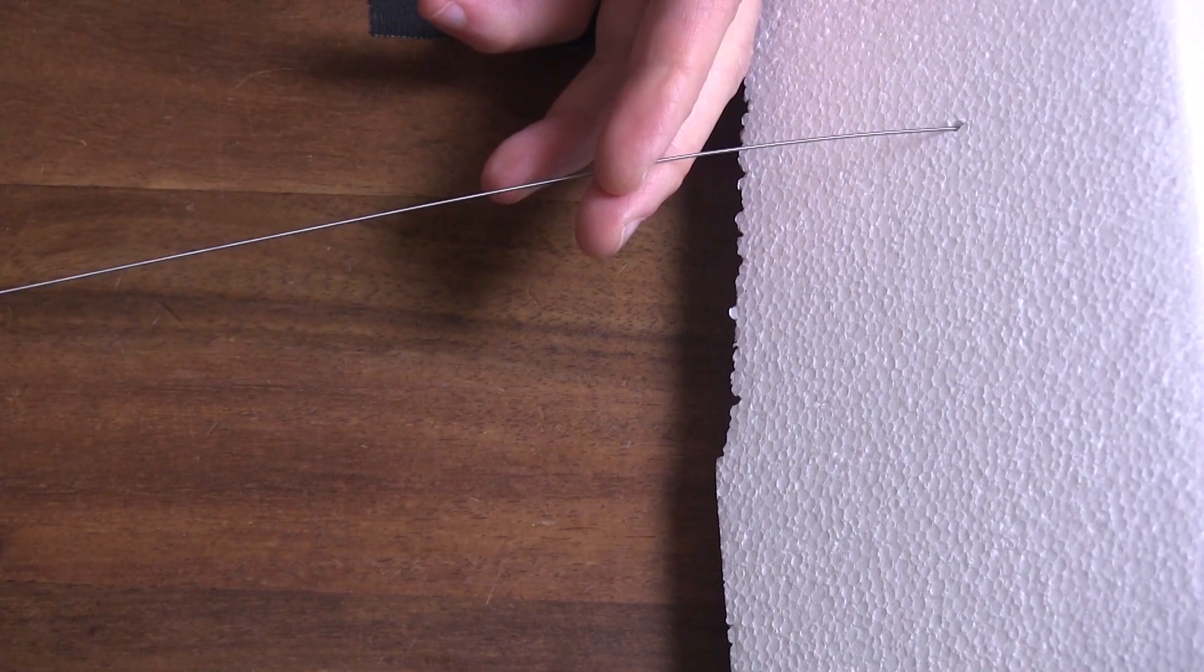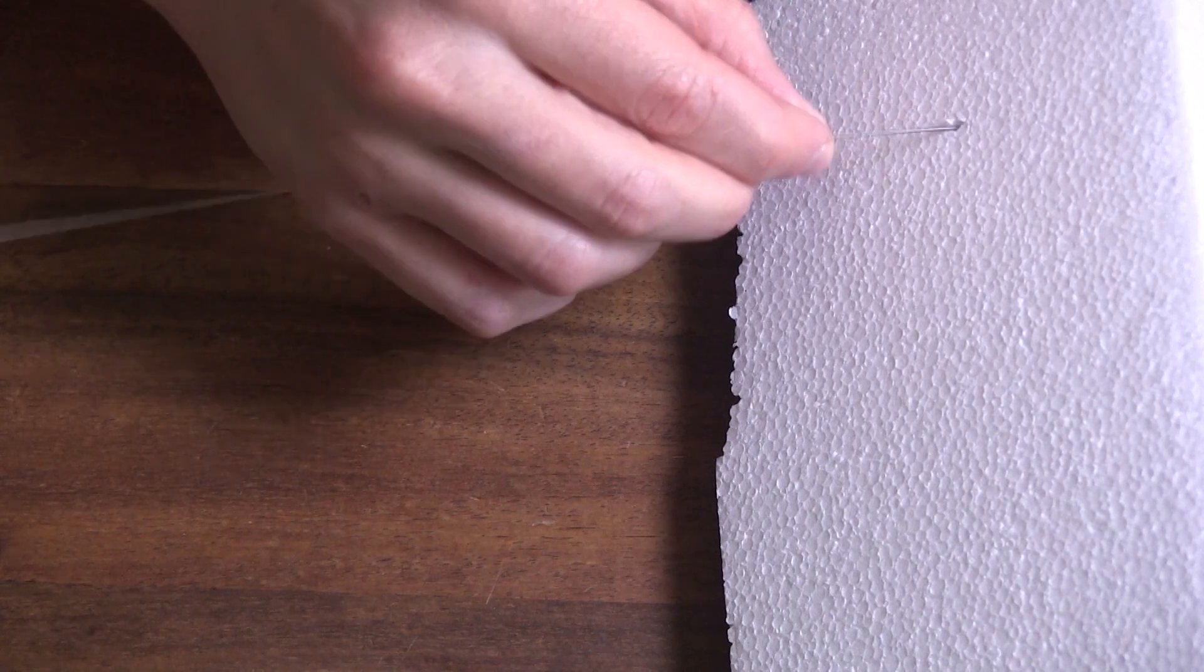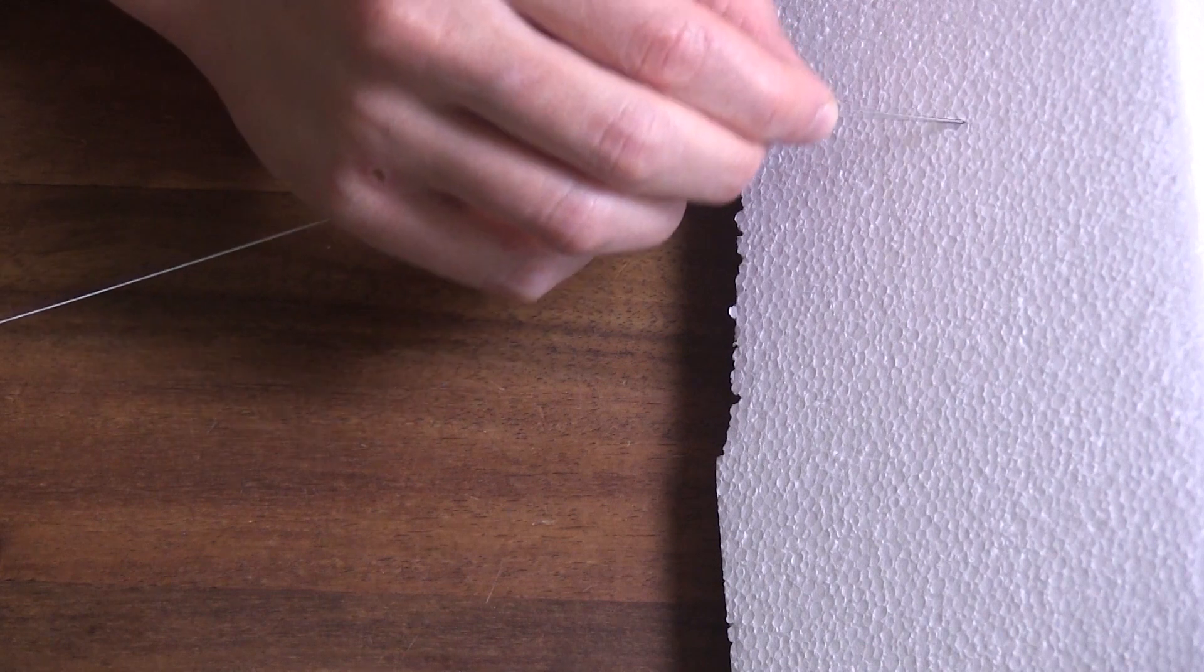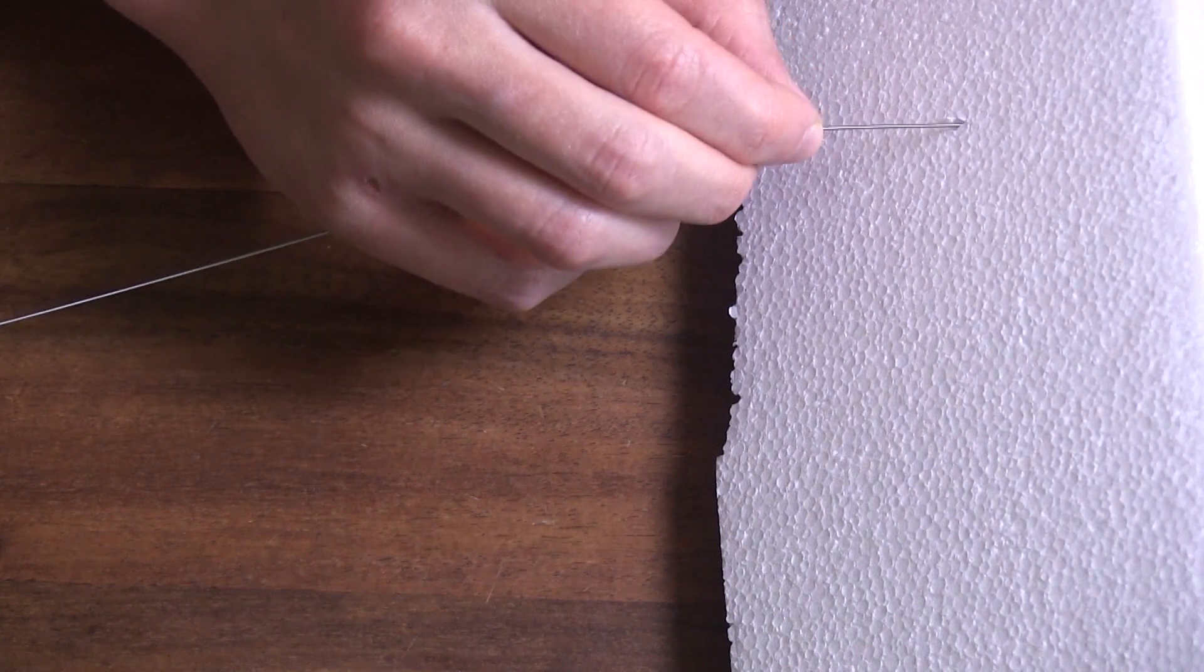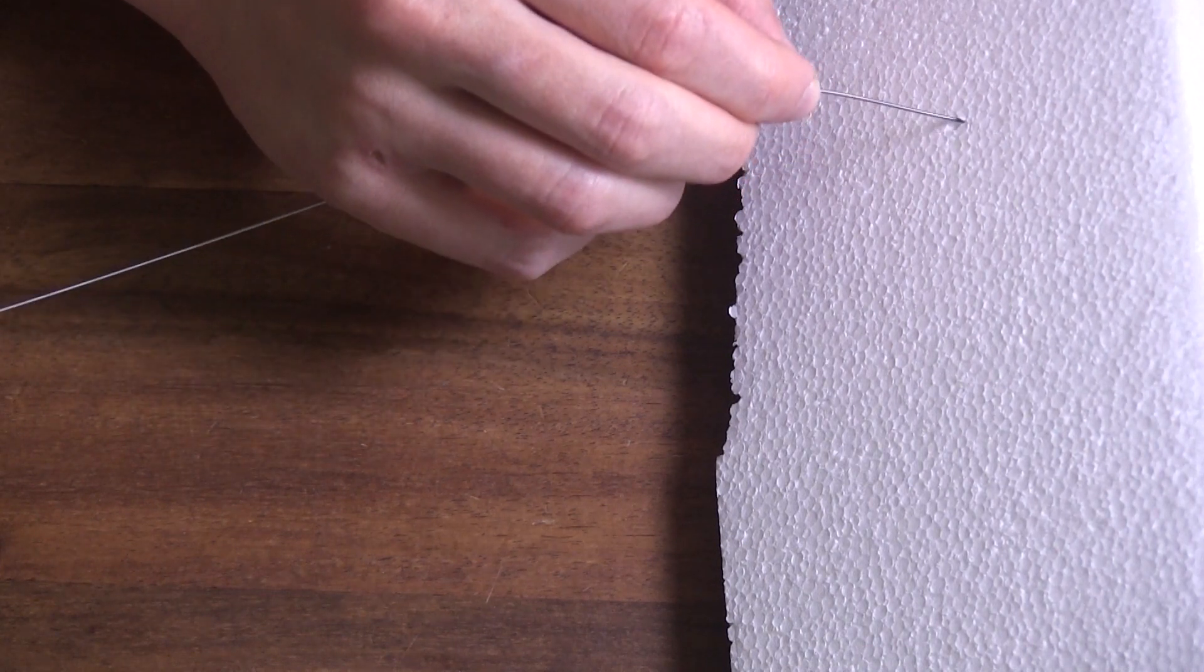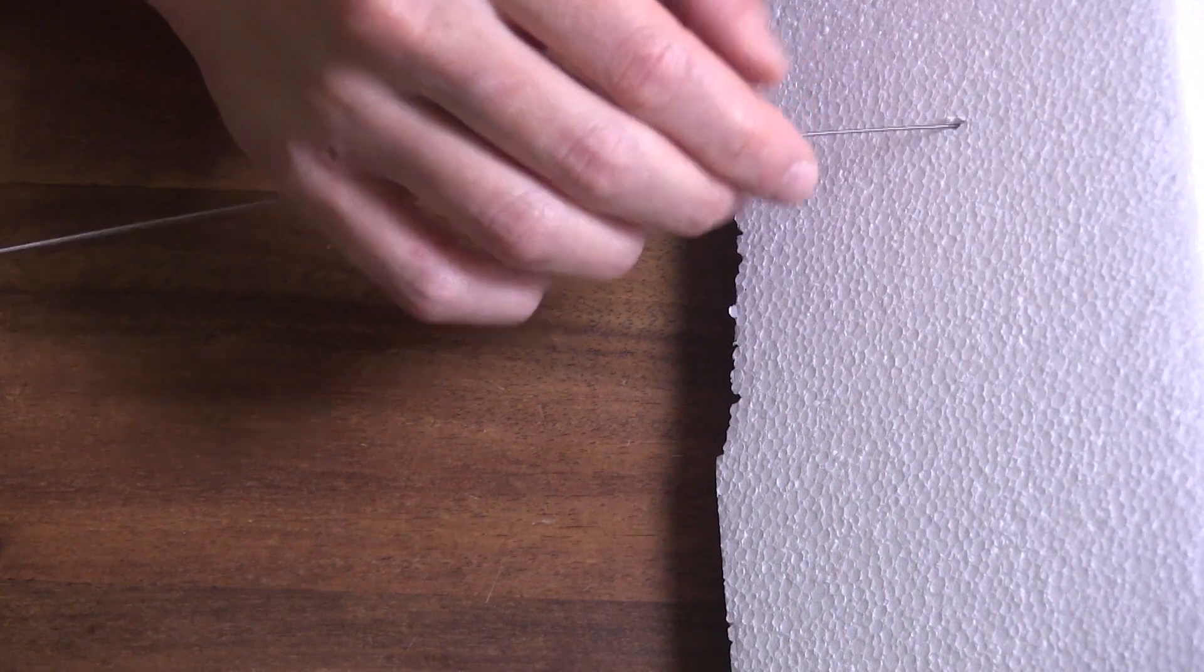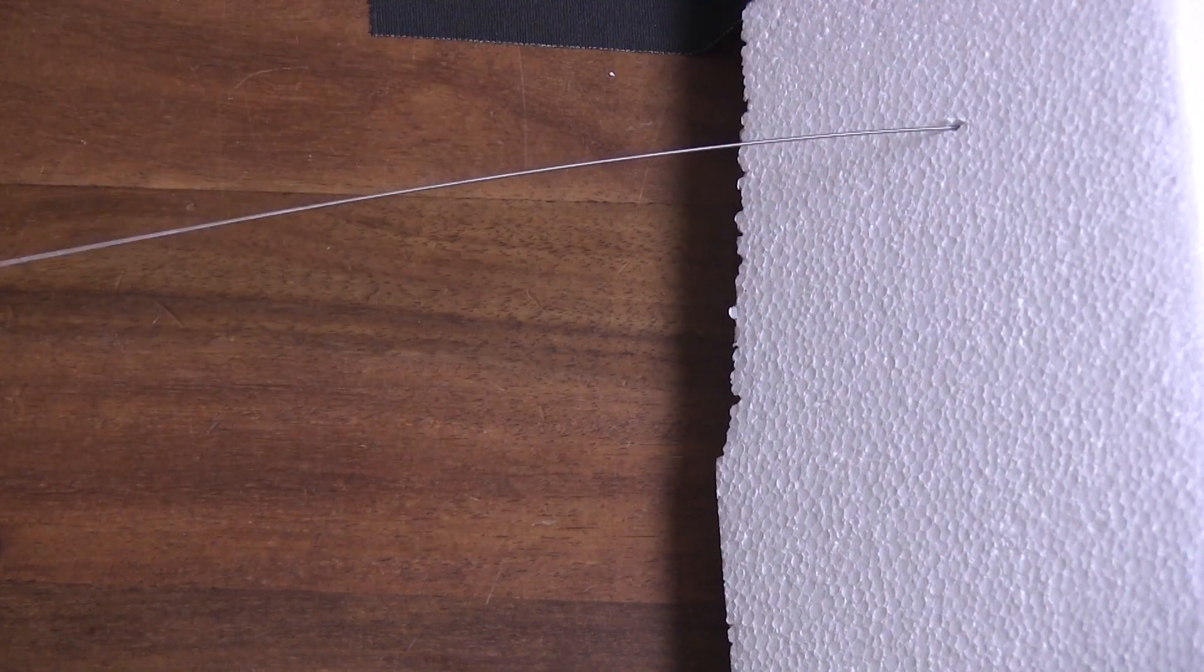Now then, this step is incredibly important. Rotate your wire in the nick you've just made to make sure there's no skin bridge between the needle insertion site and the scalpel nick, otherwise your nick was for naught and you are going to have a much harder time dilating.